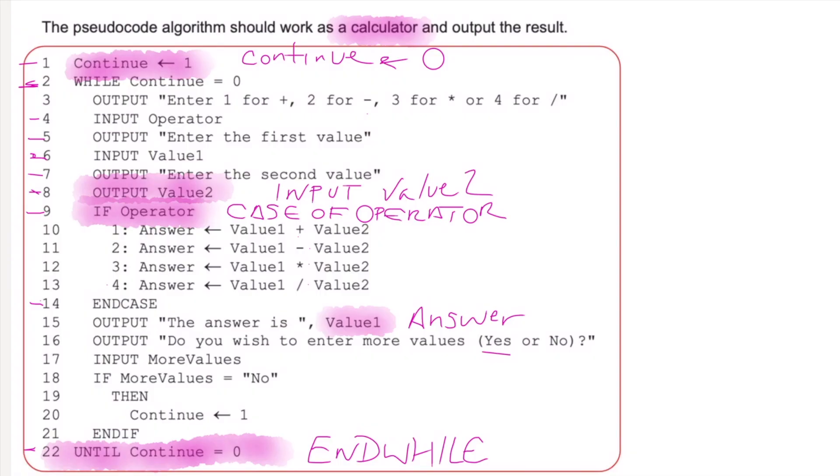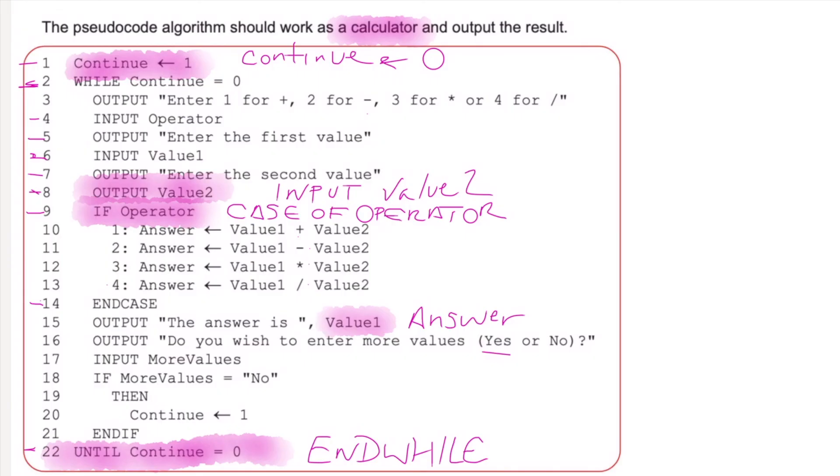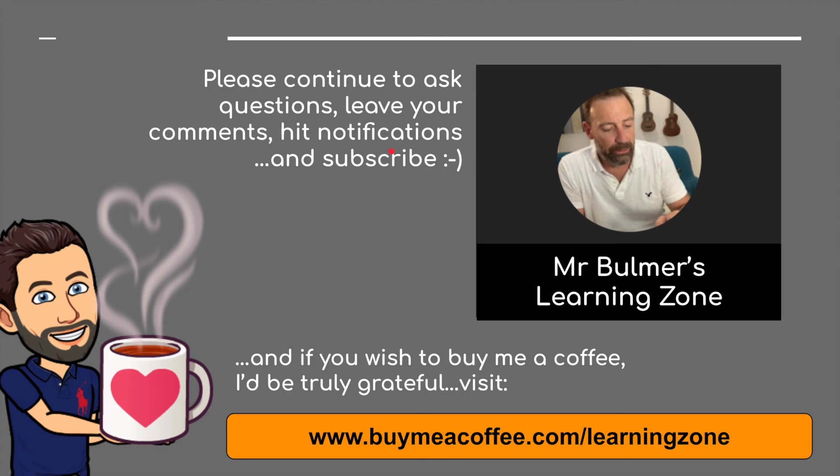So that's it, ladies and gentlemen. There are three examples from three past papers. I hope that's helped. That is the sort of thing we need to be doing. Thank you very much indeed for watching. That is it. That's Chapter 7 completed. Please continue to ask questions, leave your comments, hit notifications, and please subscribe. And finally, if you wish to buy me a coffee, I'd be truly grateful. Please visit buymeacoffee.com/learning zone. Thank you very much indeed. See you next time. Bye for now.